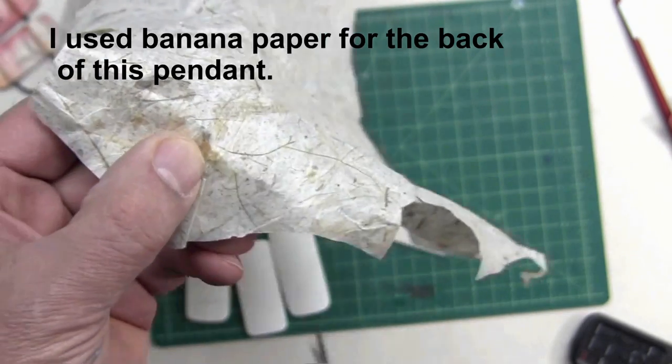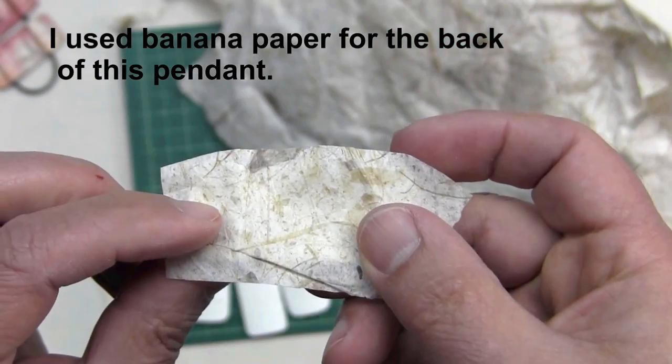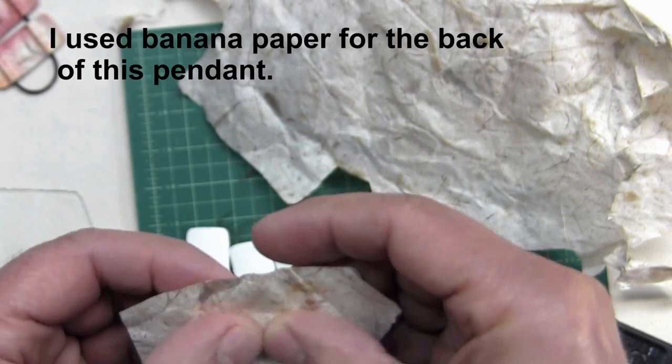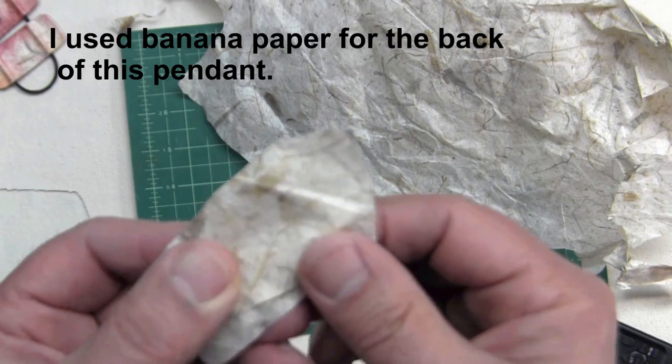And to do this, I rough cut the paper. I don't worry about being too careful. Having rough cut it, I'll simply glue it in place, work it down, and then sand off the edges.